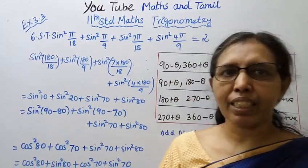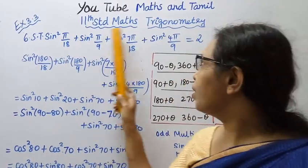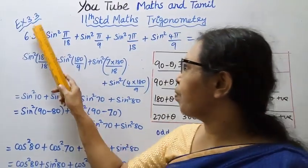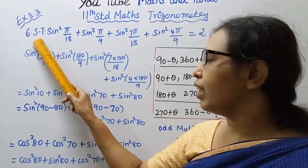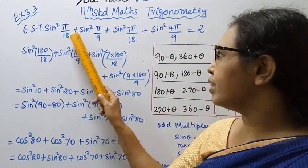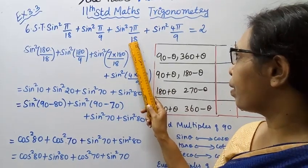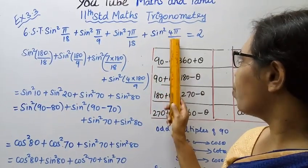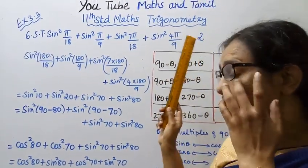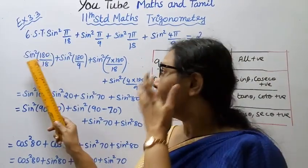Hello students, welcome to Maths and Tamil channel. 11th standard Maths Trigonometry Exercise 3.3 Question 6. Show that sine square π by 18 plus sine square π by 9 plus sine square 7π by 18 plus sine square 4π by 9 equal to 2.